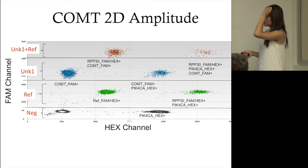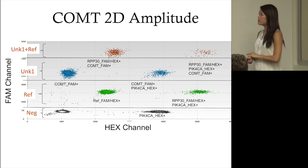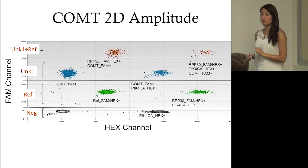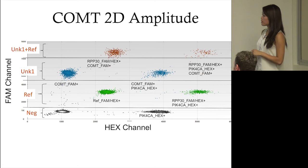Here I'm thresholding this 2D amplitude plot for COMT. You see the five clusters mentioned in the previous page, and new clusters have come about depending on the different proportions of probes in those clusters. It's really easy to threshold these clusters because they're very discrete and defined.